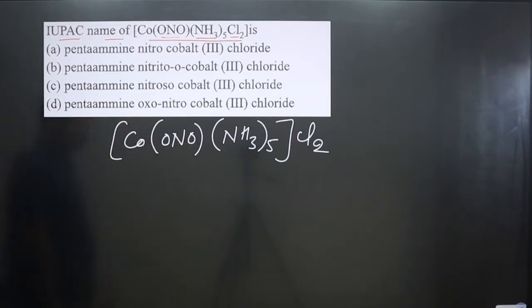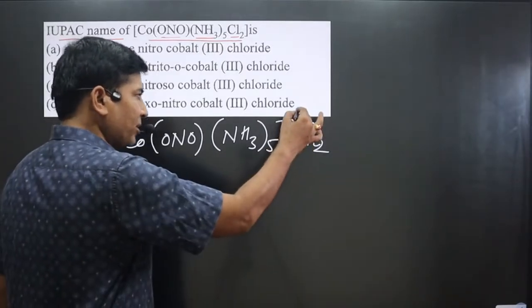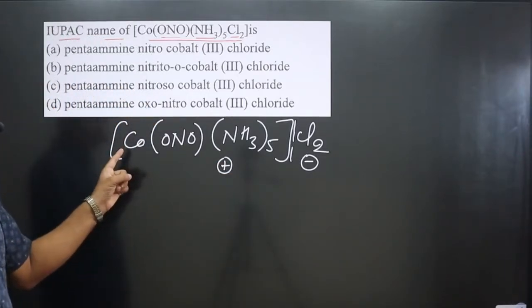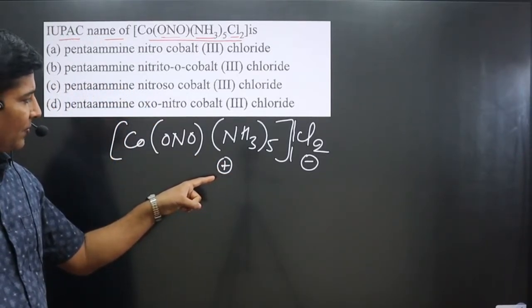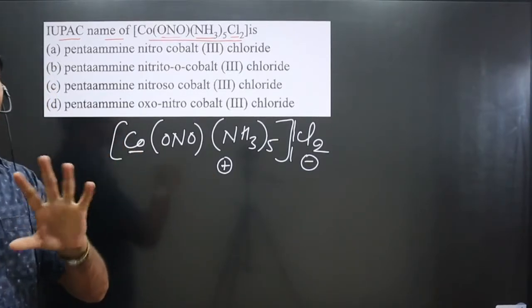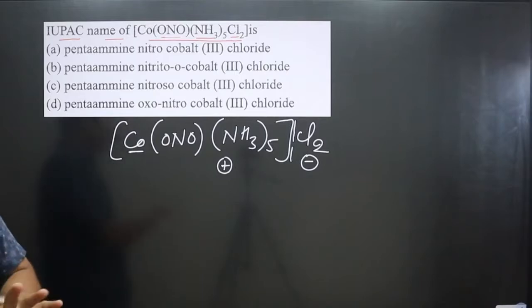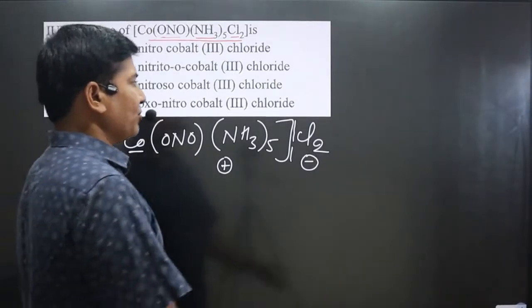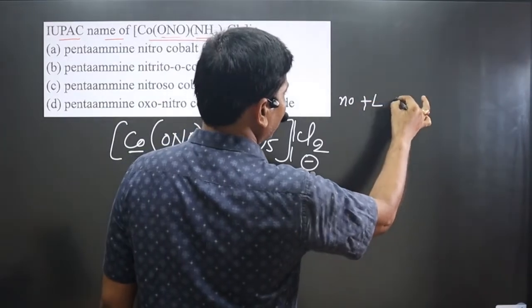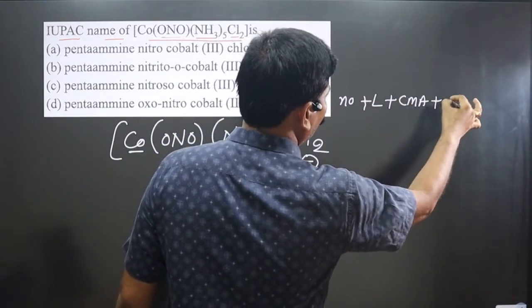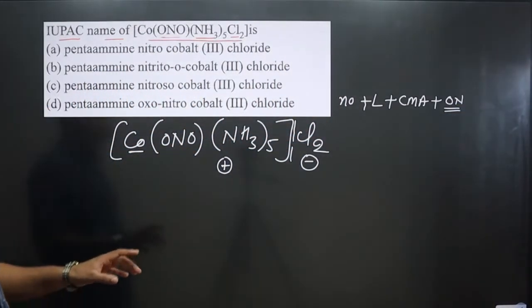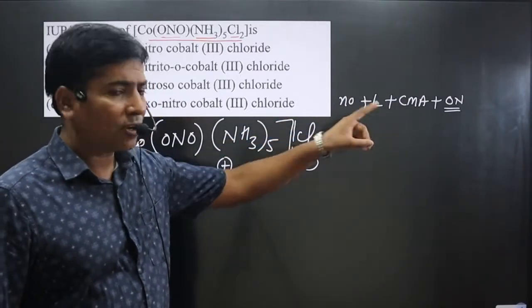Now we can name this complex. We split it into the counter (negative) part and the positive part. Since the central element cobalt is in the positive part, we use its common name 'cobalt' — not 'cobaltate'. In the anionic part, it would be named 'cobaltate'. The order for naming: first, number of ligands; second, type of ligand; third, central metal atom; fourth, oxidation number of central metal atom. If more than one type of ligand is present, we follow alphabetical order.